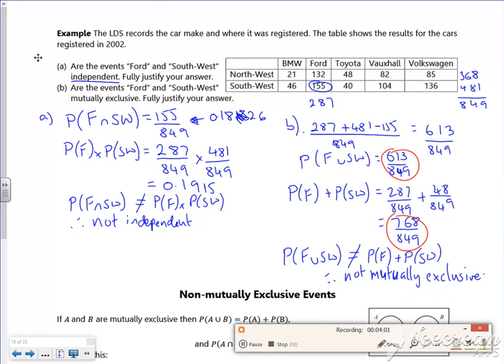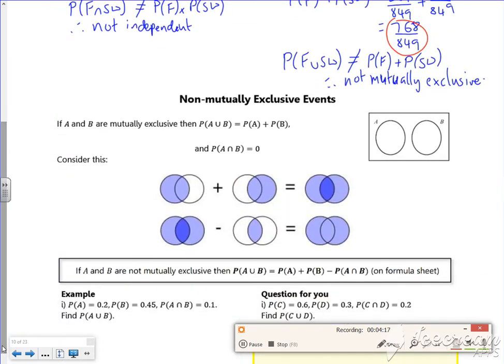Are you happy where that 613 came from? The 287 for the Fords, the 481 for the Southwest, but I've included Fords from Southwest twice there, so I had to take away the 155, which is Fords from Southwest.